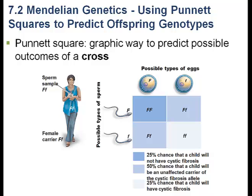Now that we understand the basic terms we'll need in discussing genetics, we want to spend a moment to talk about what we refer to as a Punnett square. A Punnett square is a simple method that can be used to predict the possible outcomes of a genetic cross. If we look at this screen, we see an example of a Punnett square.